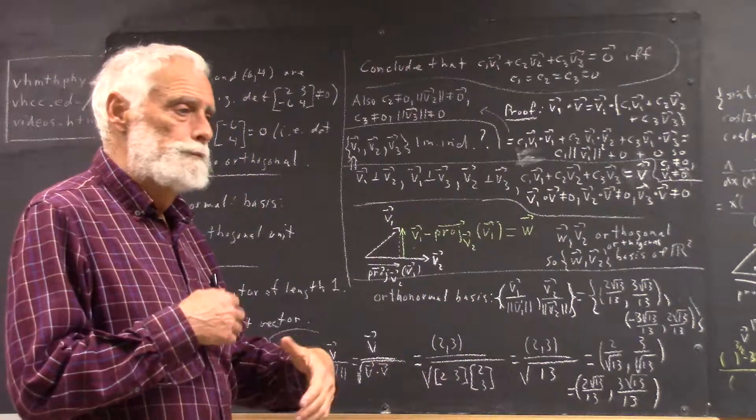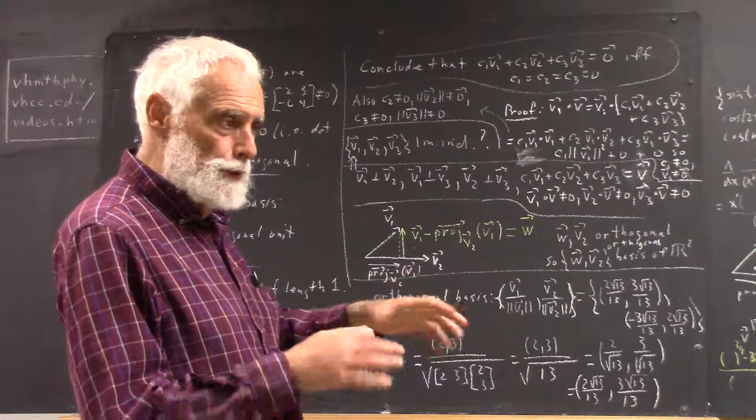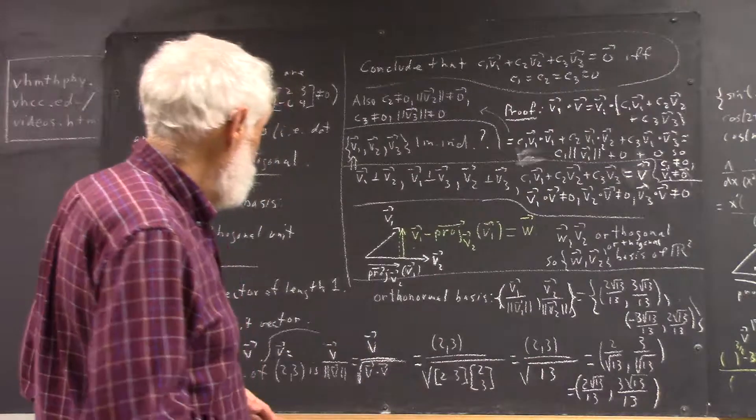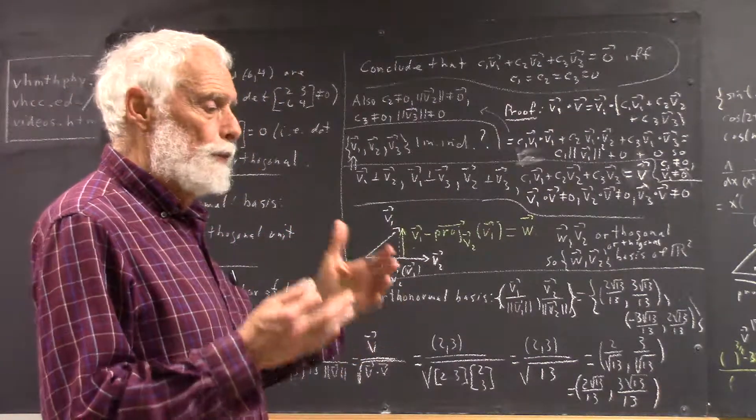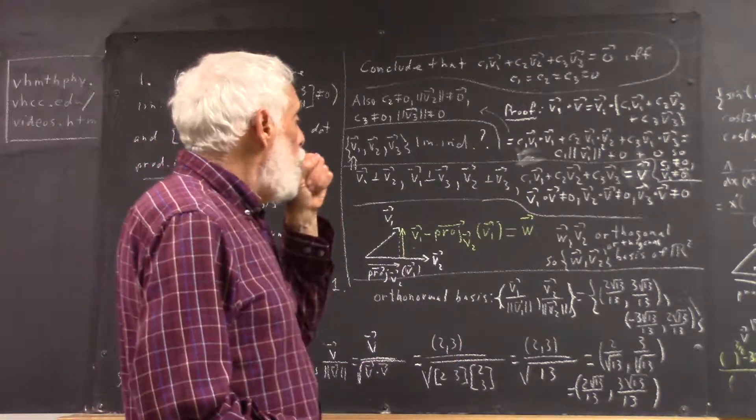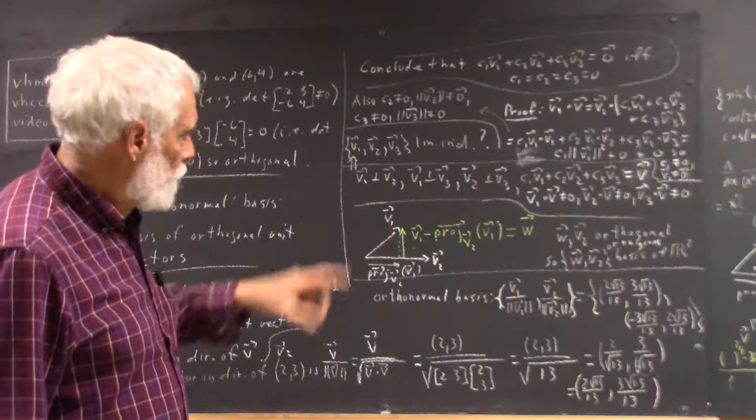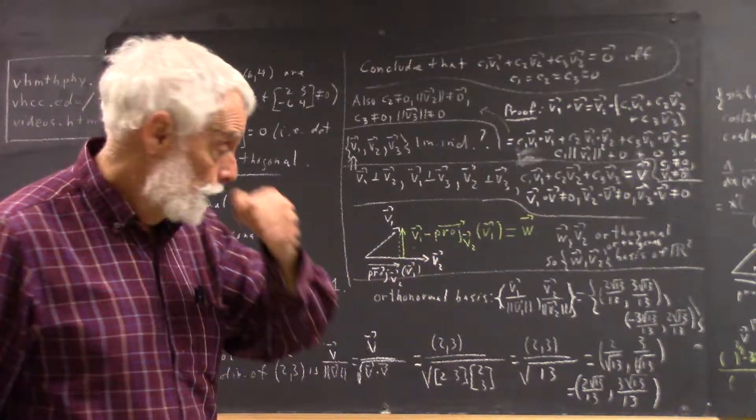You can talk about orthogonal basis when you're not even in a space that's actually geometric. And you can talk about an orthogonal basis with respect to an inner product that is not the dot product, but perpendicular really refers to being at a 90-degree angle in Euclidean space.